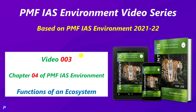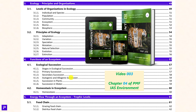In video 3 of the PMFIS Environment video series, we will be dealing with Chapter 4 of the PMFIS Environment book. Chapter 4 is 'Functions of an Ecosystem,' where we have two important concepts: Ecological Succession and Homeostasis in an Ecosystem.